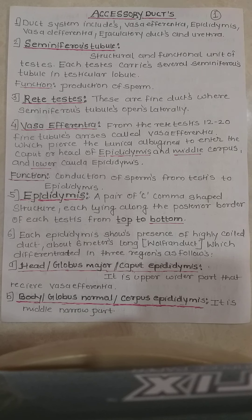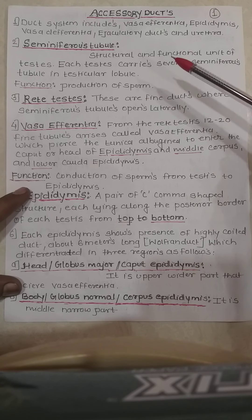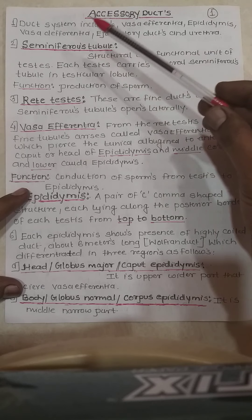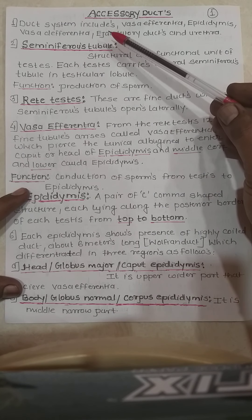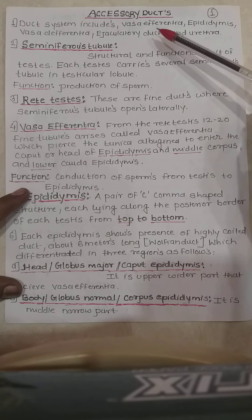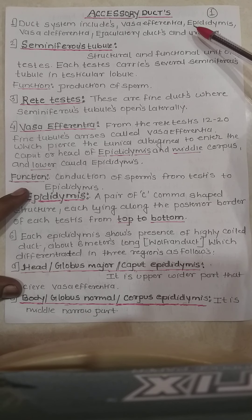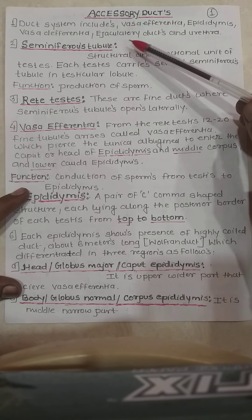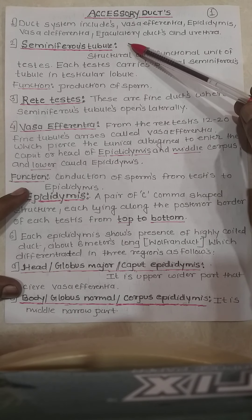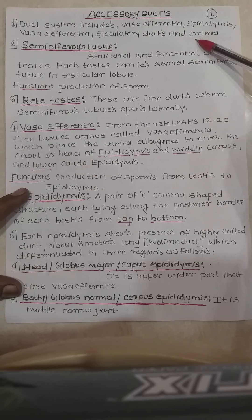The next point we are going to discuss is the accessory ducts. In accessory ducts, the duct systems include vasa efferentia, epididymis, vasa differentia, ejaculatory ducts, and urethra.